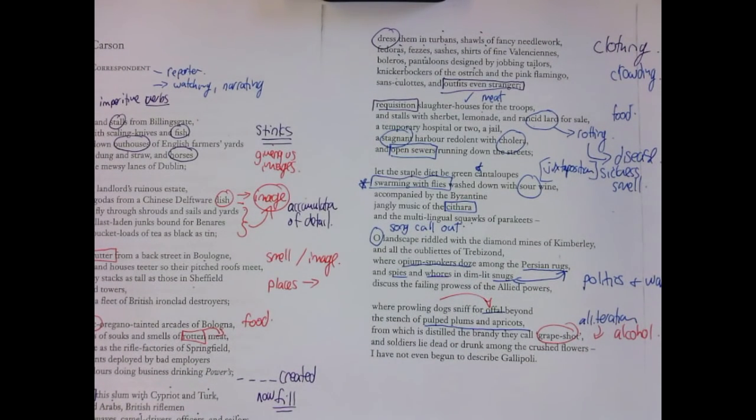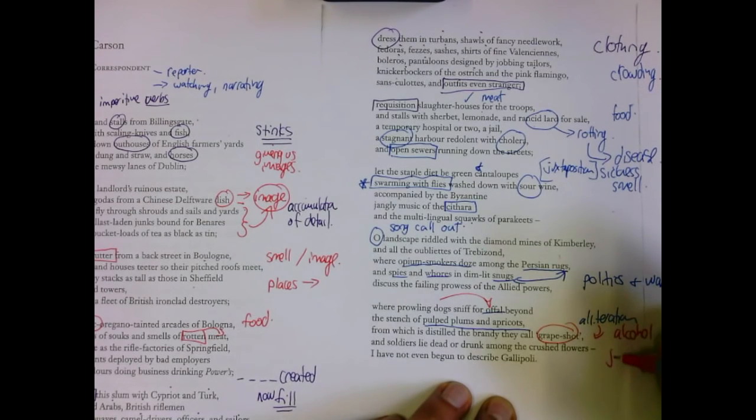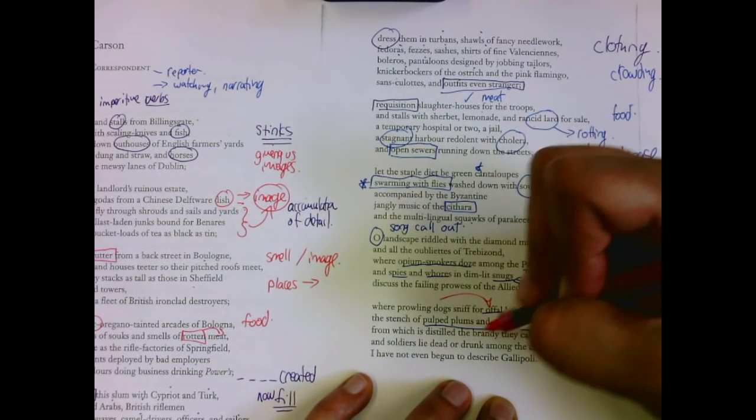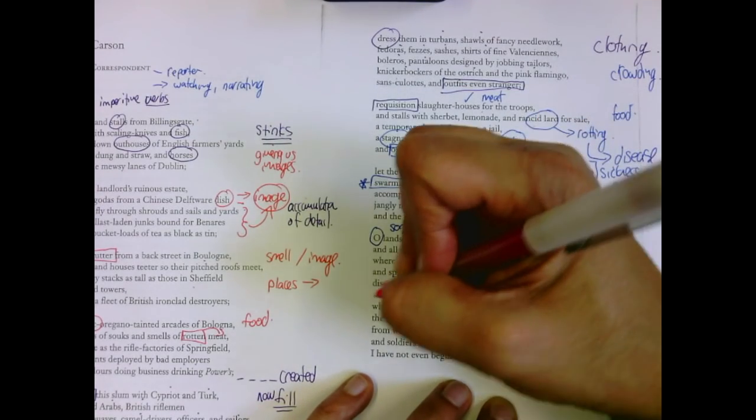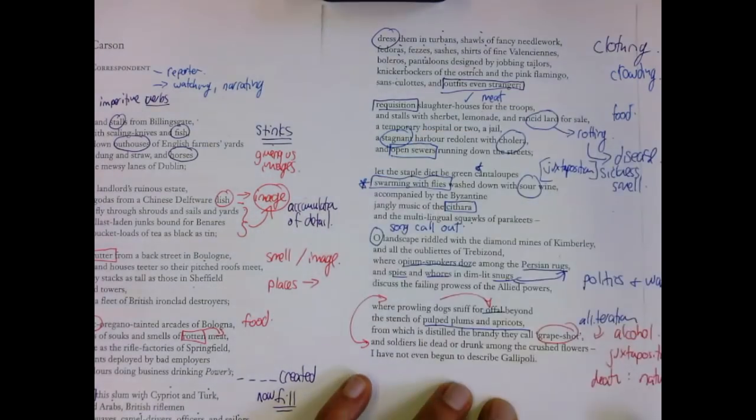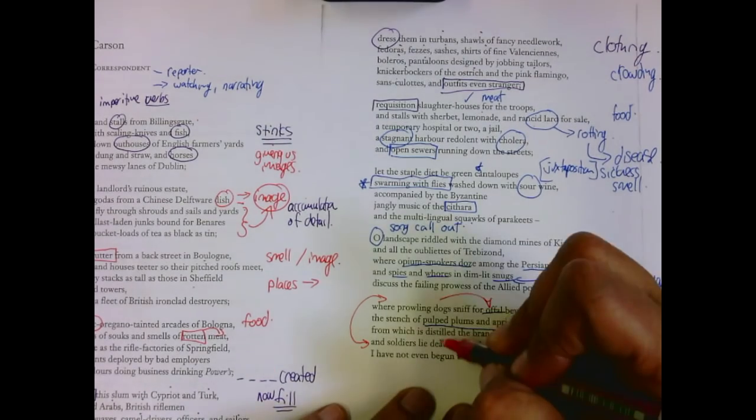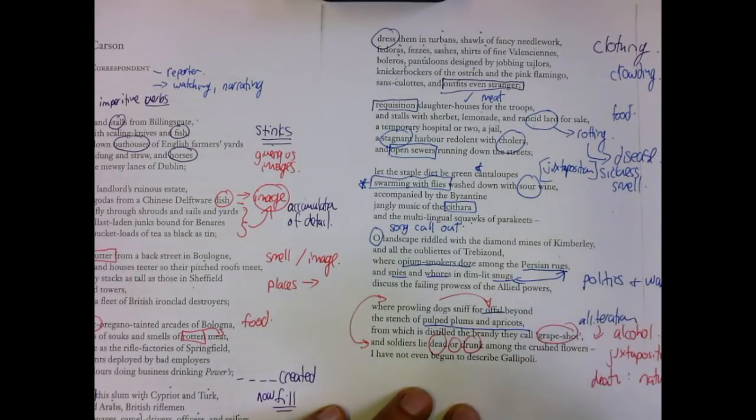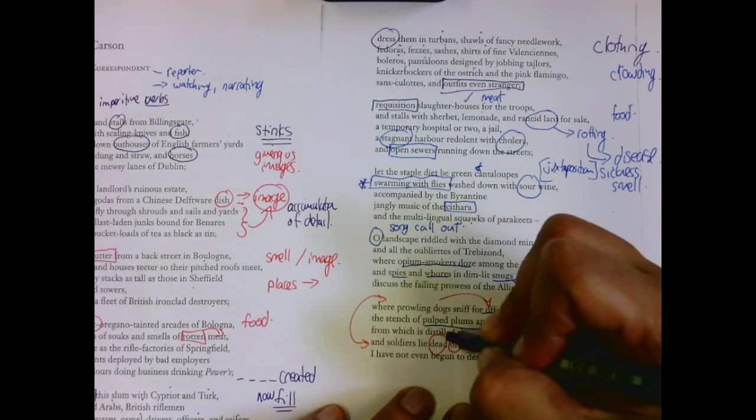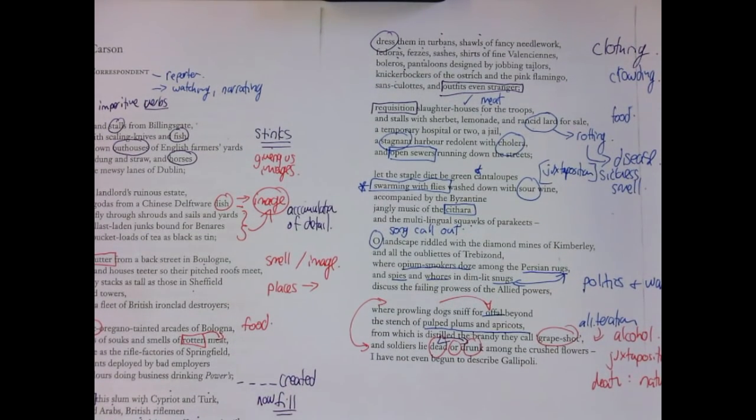And soldiers, like dead or drunk, among the crushed flowers. We get this other juxtaposition. Death and the natural world. And it's not clear, but are the dogs sniffing at the soldiers or at other meat? They're either dead or drunk, which is interesting because it seems like both are equivalent. You get a sense there's no honor here. There's no beauty. There's no real purpose to this war. This is something disgusting and pointless.